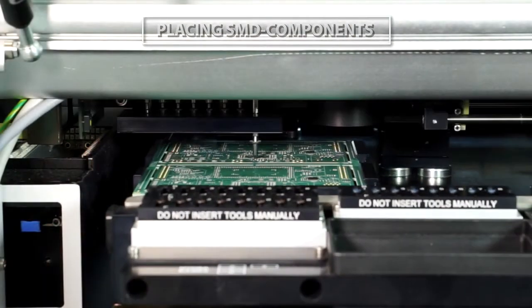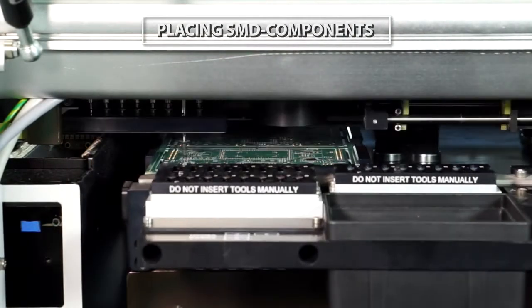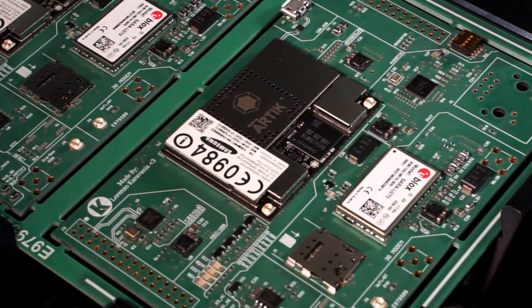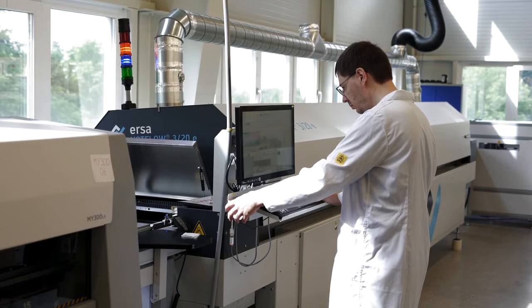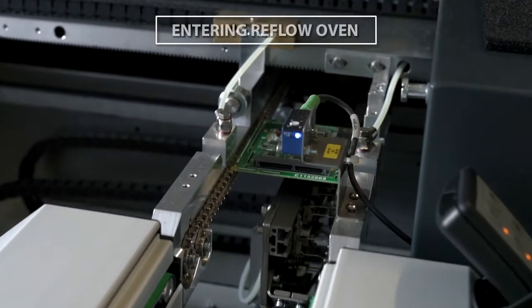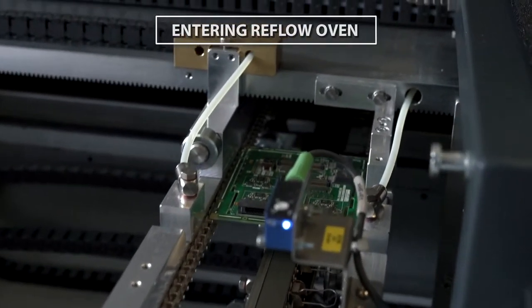During the pick and place operation, components are placed on the board on the paste deposits. A reliable electrical and physical connection is then made during the reflow soldering process. The solder paste melts during this process and cools down again to create a good solder joint.